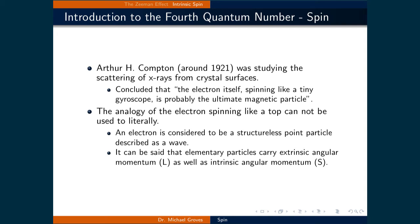Let's introduce the fourth quantum number, intrinsic spin. In 1921, Arthur H. Compton was studying the scattering of x-rays from crystal surfaces. He concluded that the electron itself, spinning like a tiny gyroscope, is probably the ultimate magnetic particle.